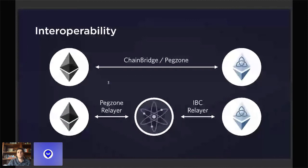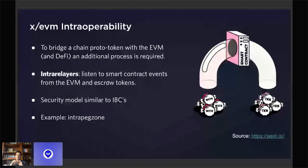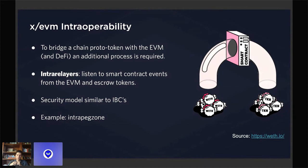So you'll have to relay and escrow tokens from the same chain, and mint new tokens that are Cosmos-compatible for the bank module within the Ethermint chain. The security model will be very similar to IBC. You will have to create smart contracts, an intra-relayer process, and probably create handshakes as well.